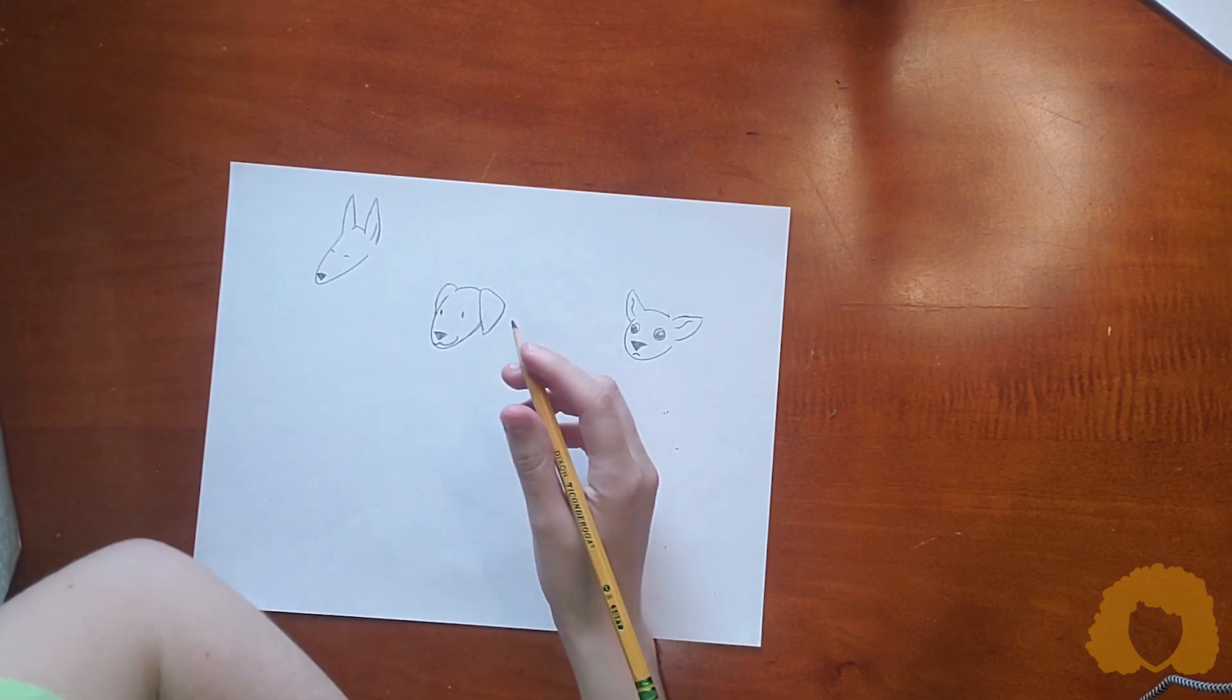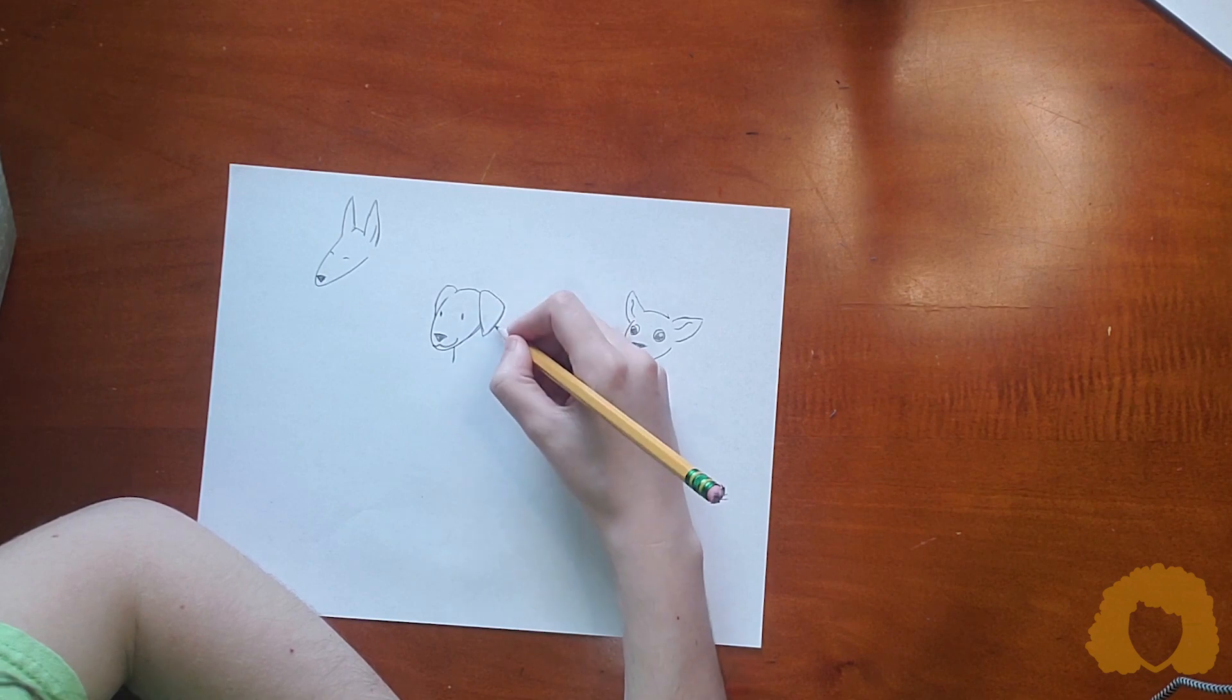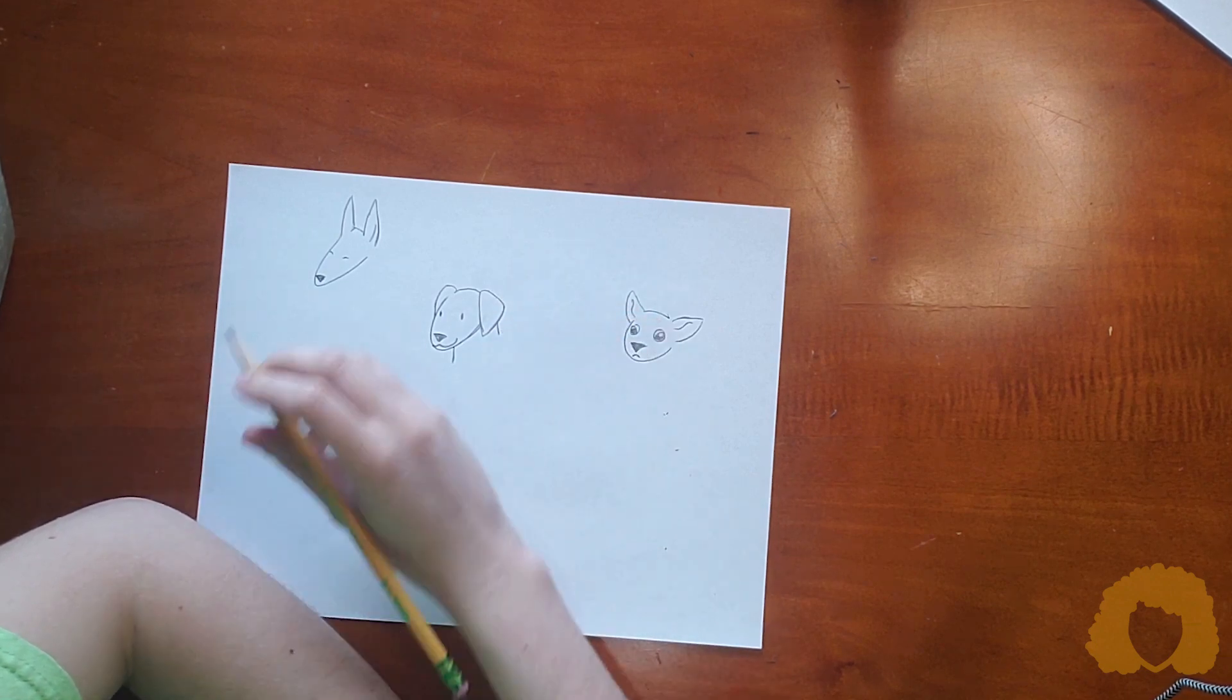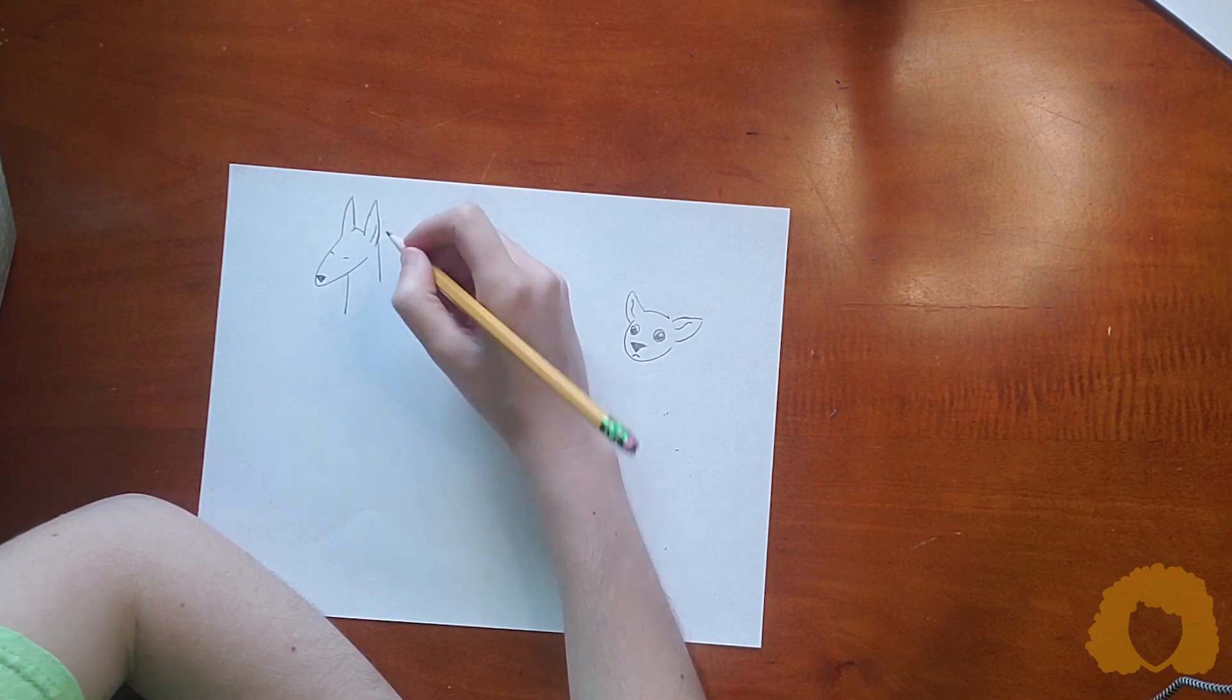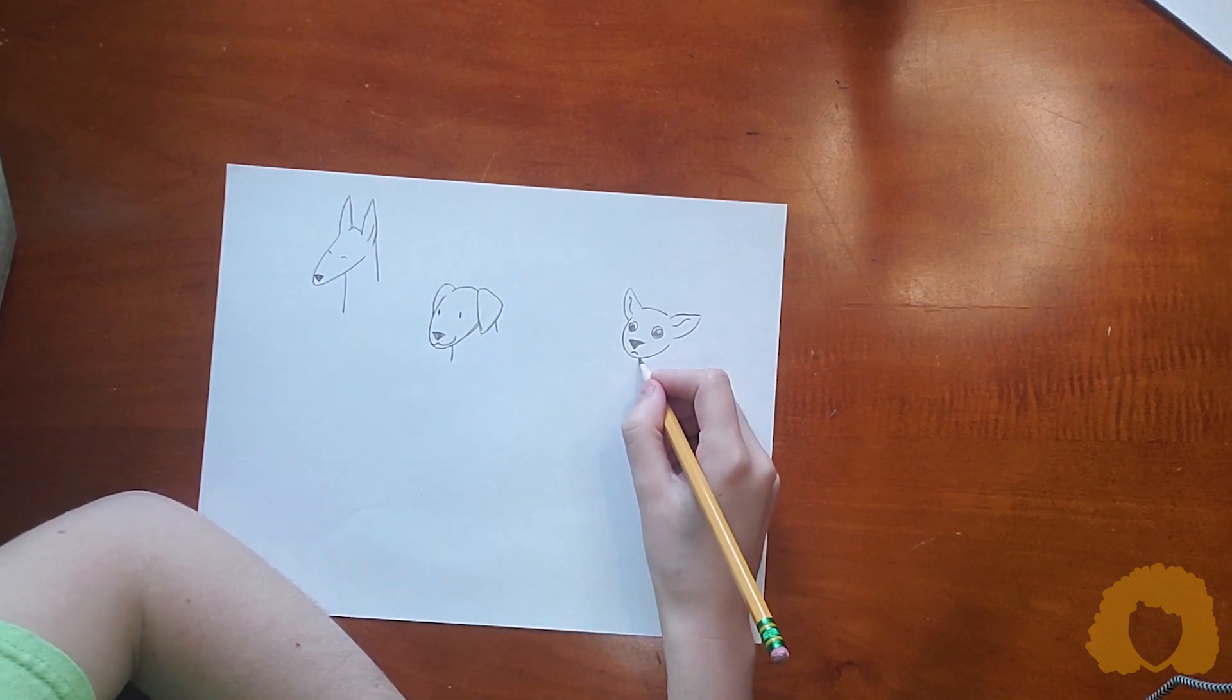Then you're going to need your neck. Start with two straight lines for your neck. Again, this is going to vary depending on your dog. It might have a very long neck. It might not have much of a neck at all.